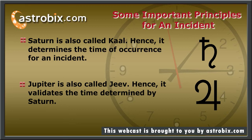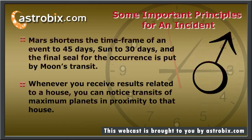Saturn's transit is for 2.5 years and Jupiter's is for 1 year, and these two planets yield results according to the time frame of their transits. Looking at Saturn's transit and Jupiter's transit will help you shorten the expected event's time frame to 1 year. Then, Mars's 45-day transit will further shorten it to 45 days if found. Sun has a 30-day transit and if found applicable will reduce the time frame to this period. Finally, locate the Moon's transit which is 2.5 days and you will have a pretty good estimate of when the incident might occur.